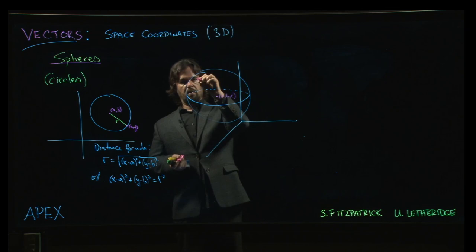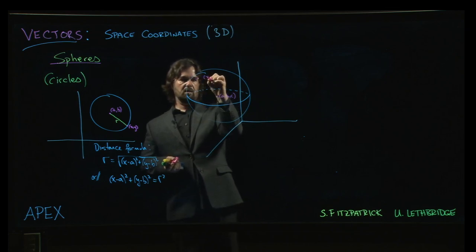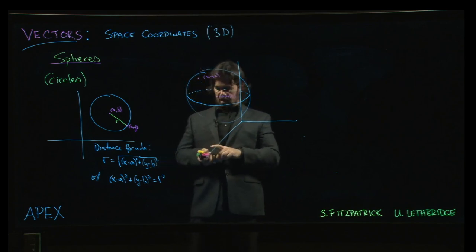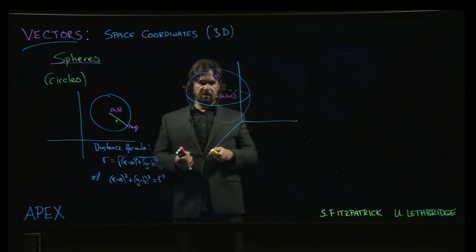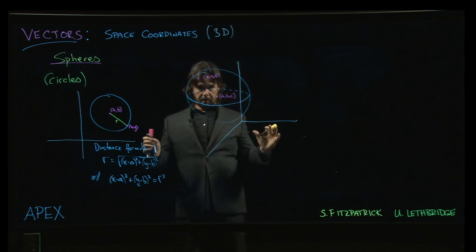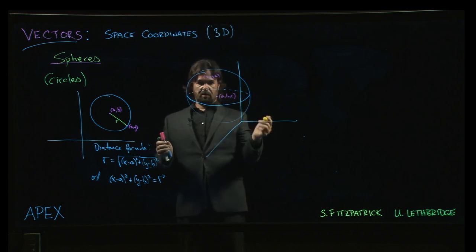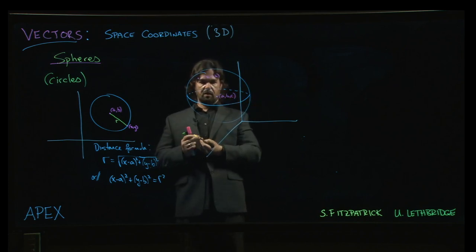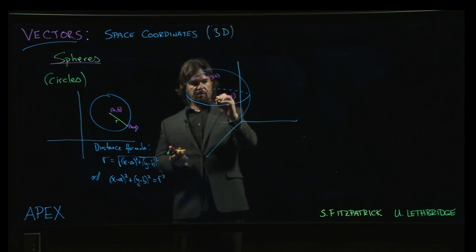And some point on the surface of the sphere, let's say x, y, z will be there. And the defining property of a sphere is it's the set of all points in three dimensions that are some fixed distance from the center, right? And again, we refer to that as the radius.